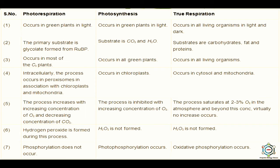Photorespiration occurs in most C3 plants; photosynthesis occurs in all green plants; true respiration occurs in all living organisms. Intracellularly, photorespiration occurs in peroxisomes in association with chloroplast and mitochondria; photosynthesis occurs in the chloroplast; true respiration occurs in cytosol and mitochondria. Photorespiration increases with increasing oxygen concentration and decreasing carbon dioxide concentration; photosynthesis is inhibited with increasing oxygen; true respiration saturates at 2-3% oxygen with virtually no increase beyond that.